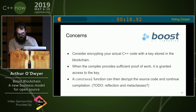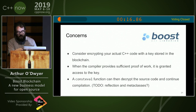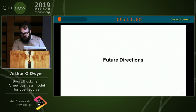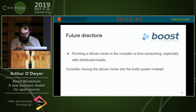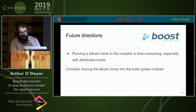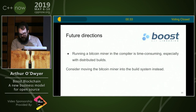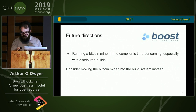Reflection and metaclasses might also help. Also, if your users are doing something you don't want them to do, it might be a problem that could be solved with contracts. Future directions — I've only really thought of one. Running a Bitcoin miner in the compiler is time-consuming and wasteful, especially with distributed builds. We might consider moving the Bitcoin miner into the build system. However, modules might make this a moot point, as modules effectively moves the build system back into the compiler.